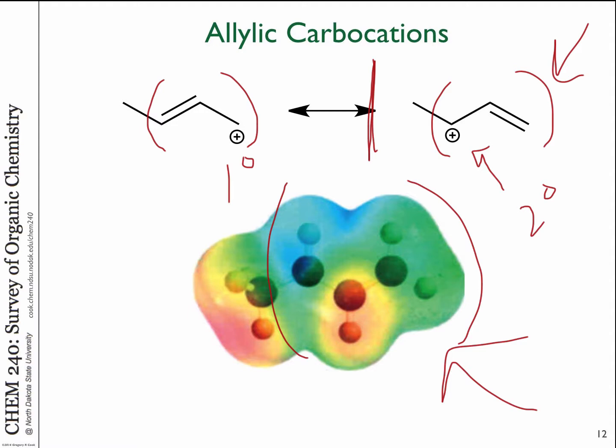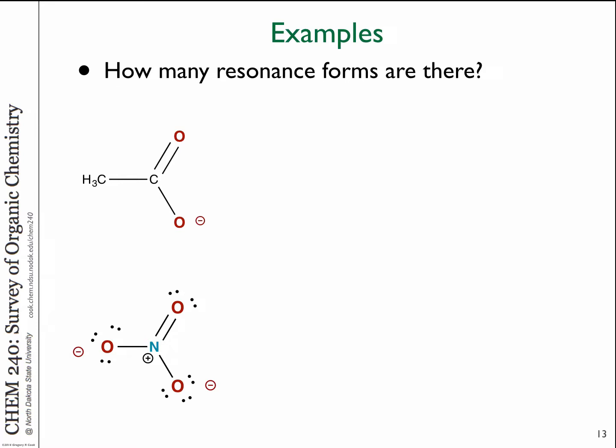You can see from the electrostatic diagram that there's more plus charge on the middle carbon, and that impacts reactivity — knowing where the charges are. So far we've shown examples with just one other resonance form, giving two extremes with something in between. We've talked about acetate before — the acetate anion has resonance forms as well.